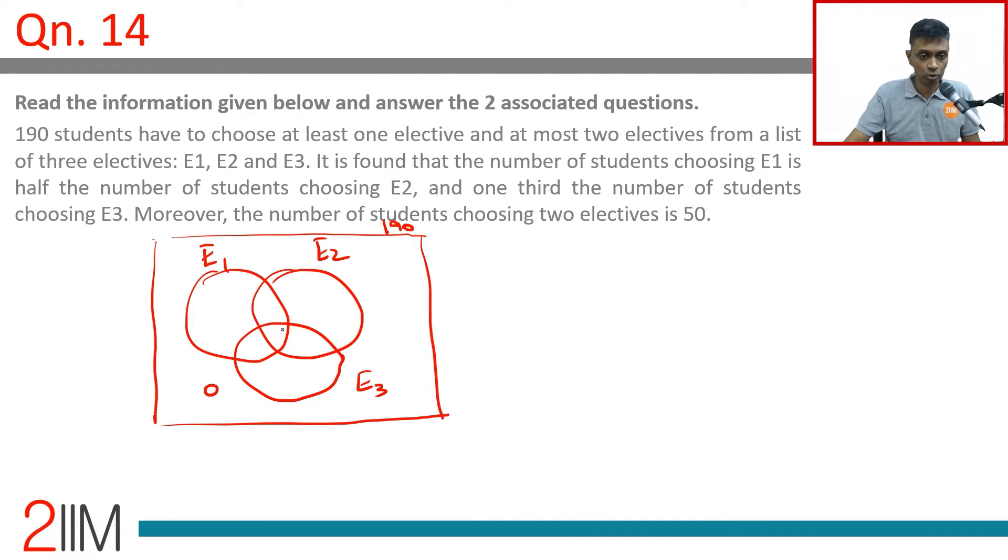And at most two, so this is zero. It is found that the number of students choosing e1 is half the number choosing e2 and one third the number choosing e3. This is x, this is 2x, this is 3x. Moreover, the number of students choosing two electives is 50, so we have this as p, q, r. We know p plus q plus r is 50.